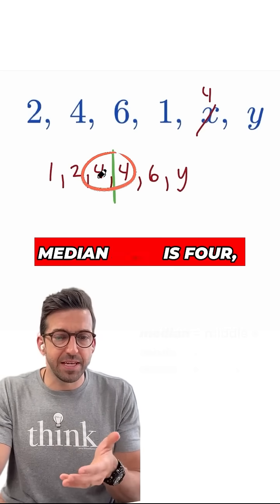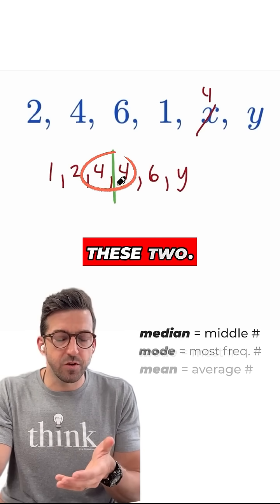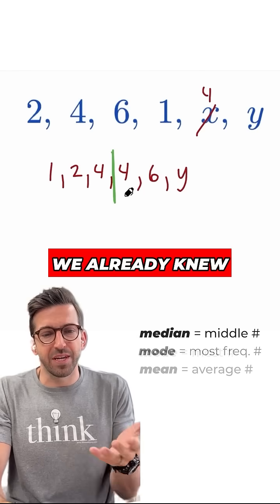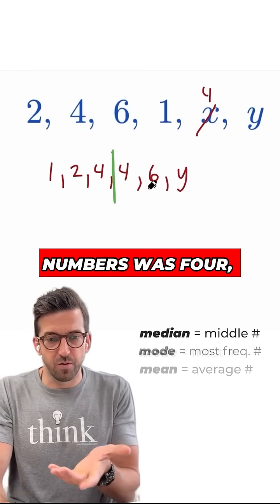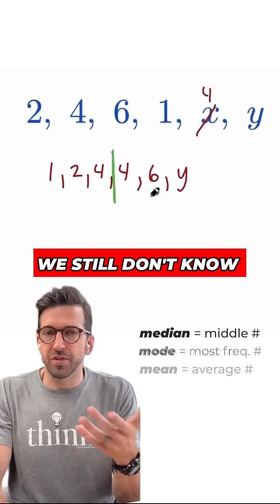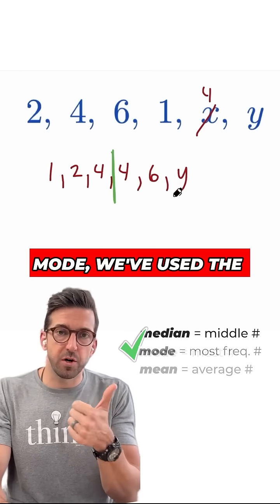So in our case, the median here is four. It'd be in between these two. I guess that doesn't really help because we already knew that one of the numbers was four. We found that that was the x. We still don't know that other missing number. So we've used the mode. We've used the median. Let's go on to the mean.